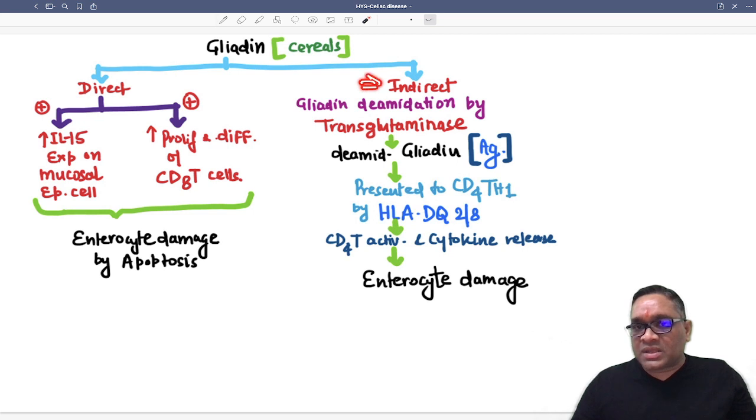In indirect method, what happens? Gliadin, which is present in cereals, will be deamidated by enzyme called transglutaminase. So transglutaminase will deamidate them into deamidated gliadin and that will be working like an antigen. This antigen is now getting presented to the Th1 cell, CD4 helper T cell 1.